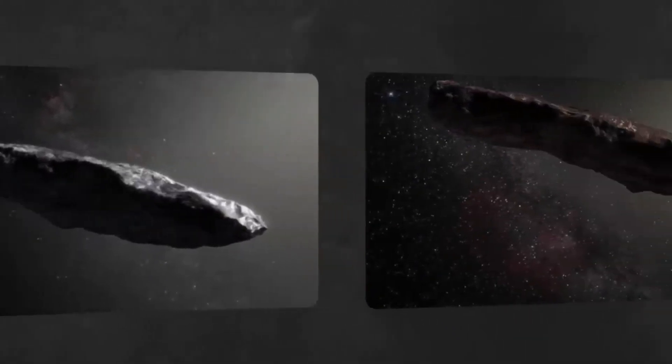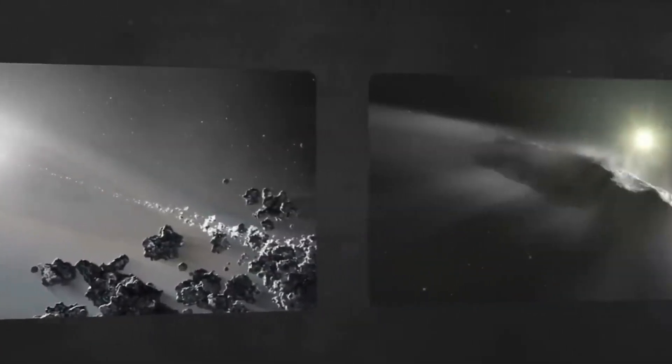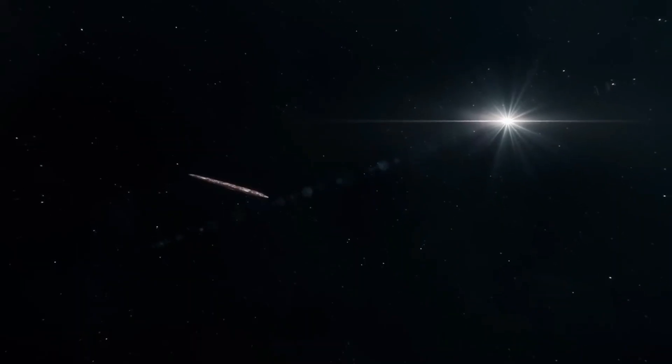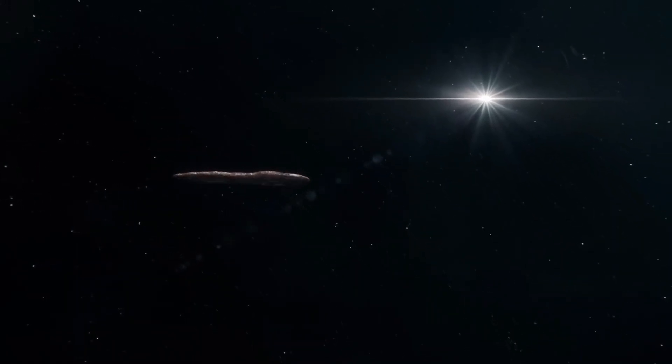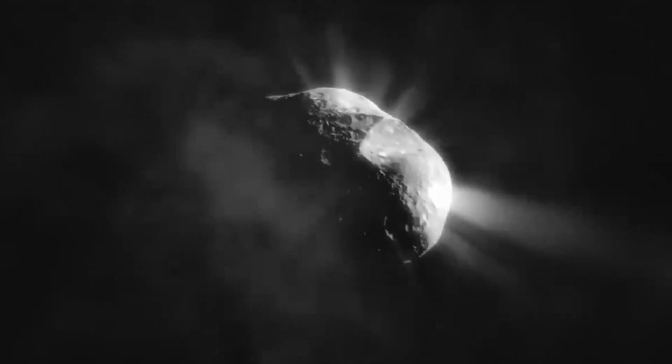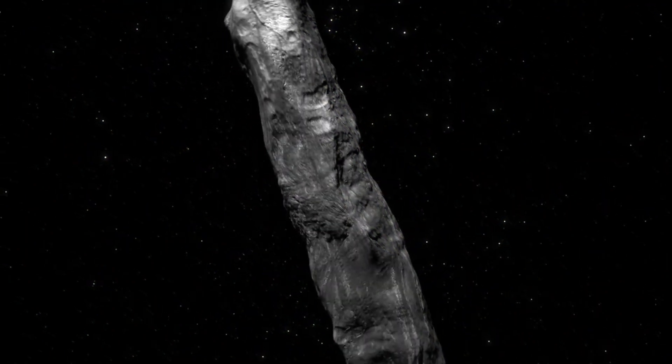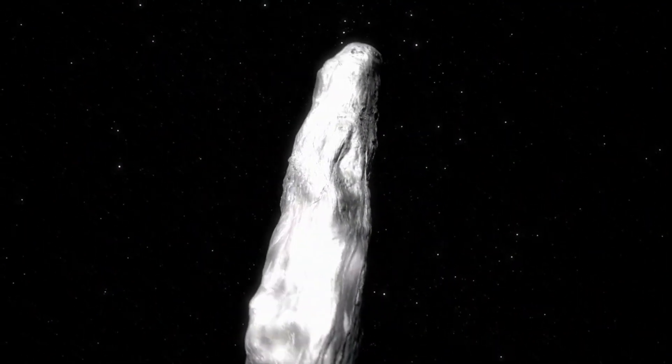Much like most comets, Oumuamua has a lot of water on it. Due to the extreme cold in deep space, the water would have turned into ice in what is called an amorphous state before the comet entered the solar system. Ice that is amorphous has a porous structure with gaps. This is different from regular ice, which has a solid crystalline structure.